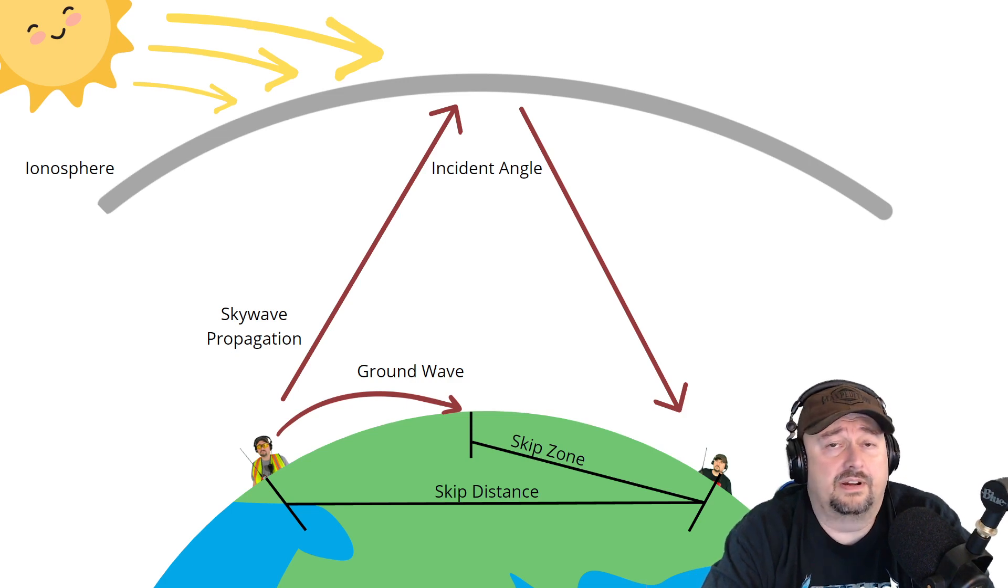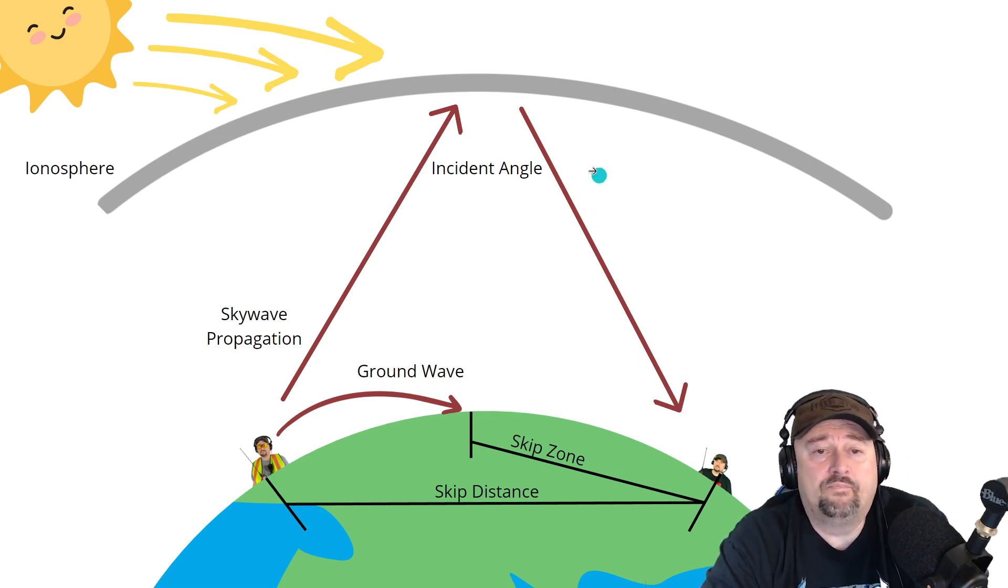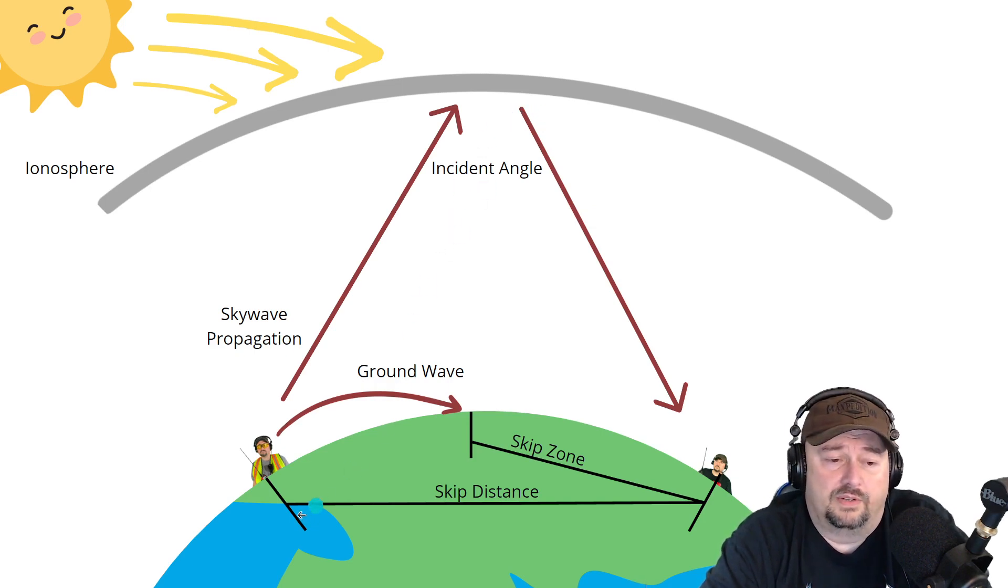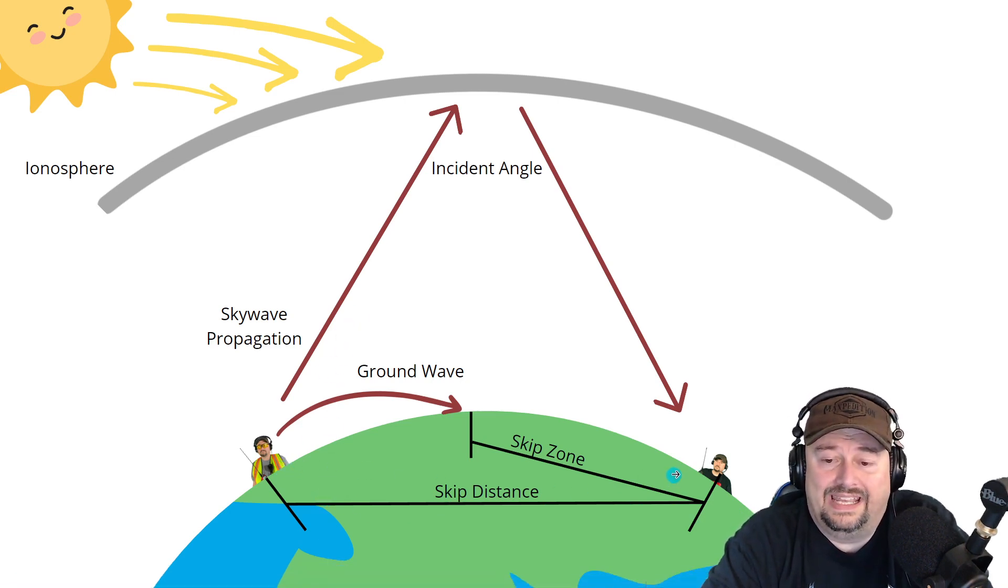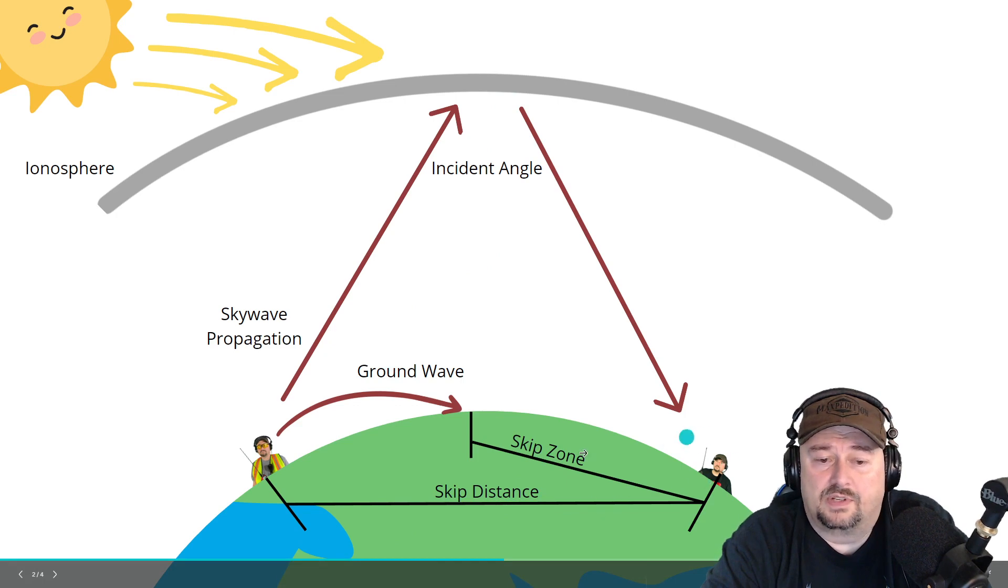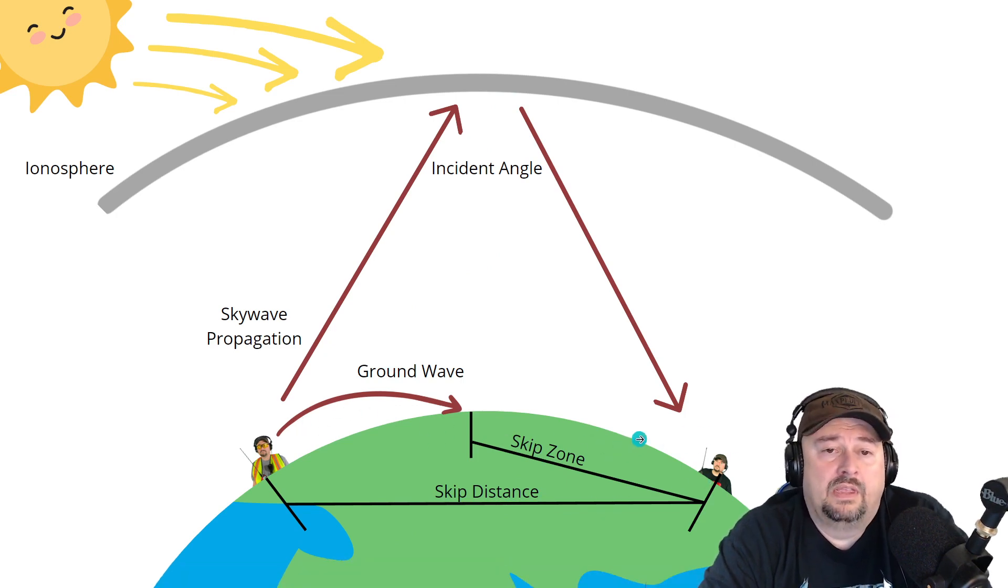And the incident angle plays a very important part in propagation because it determines your skip distance. So if you imagine a triangle and you look down at the bottom of this, the bottom of the triangle is what we would call our skip distance. And that is the distance between APE1 and APE2. And that means that at this angle, at this time of day, at this particular frequency, we can expect reliable results from 1 to 2. Pretty easy stuff, right?